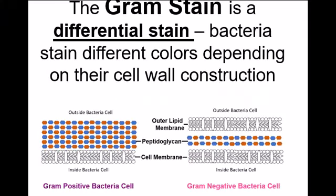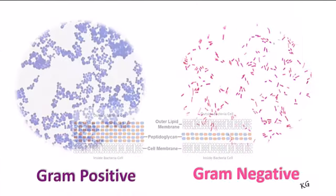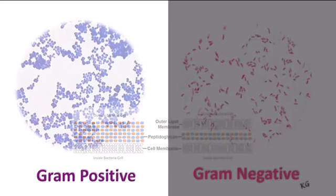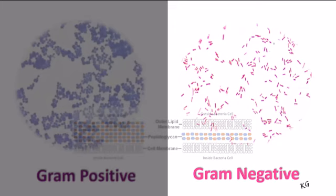The gram stain is considered a differential stain because the color tells you which of those two types of constructions that bacteria is using. The thick layers of peptidoglycan in gram-positive bacteria result in purple cells, while the structure of the gram-negative results in pink cells.